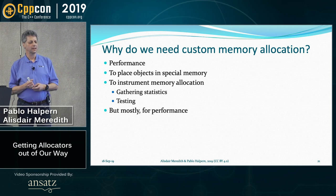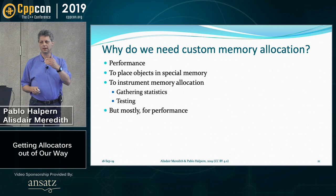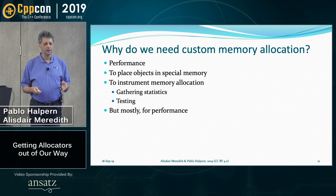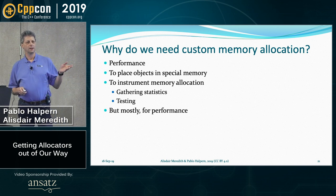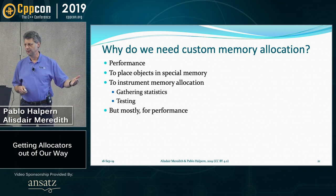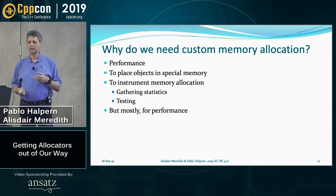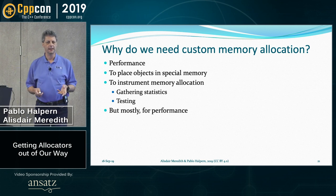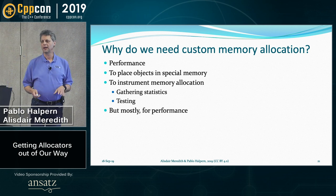So why do we need custom memory allocation? We want to improve performance — we want all these good qualities that make programs fast. We want to be able to place objects in special kinds of memory, for example persistent memory. And we want to instrument the use of a specific object's memory — for example, to see if it's leaking memory, using memory inefficiently, doing too many allocations and deallocations. That's great for testing or performance measurements. We can make sure that things get allocated in contiguous pages, avoid concurrency locks in many situations, reduce fragmentation, and gather statistics on allocations and deallocations.